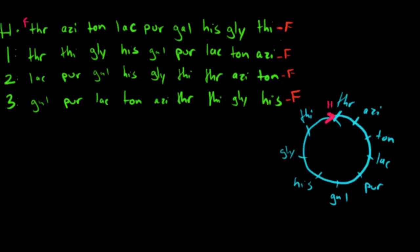Let me draw that out so it makes sense. You have THR, ASI, TAN, LAC, PUR, GAL, HIS, GLY, THI. If the F-factor comes in after THI, it's going to be behind THR facing ASI, which is right here.